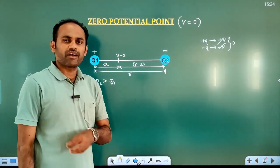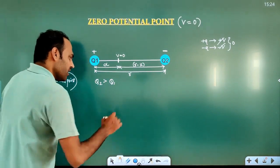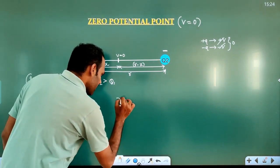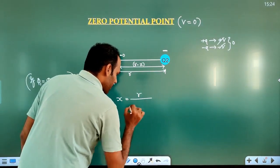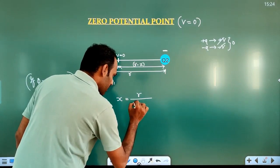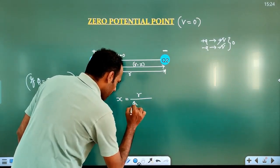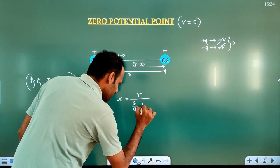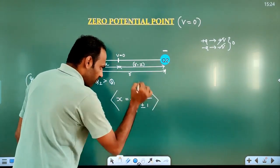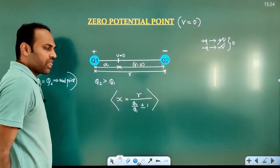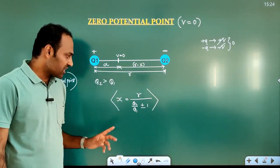The best formula is: x equals r divided by (√(q2/q1) ± 1). This is the formula to find out the zero potential point, where x is the distance from the smaller charge to the zero potential point, and r is the distance between both charges.